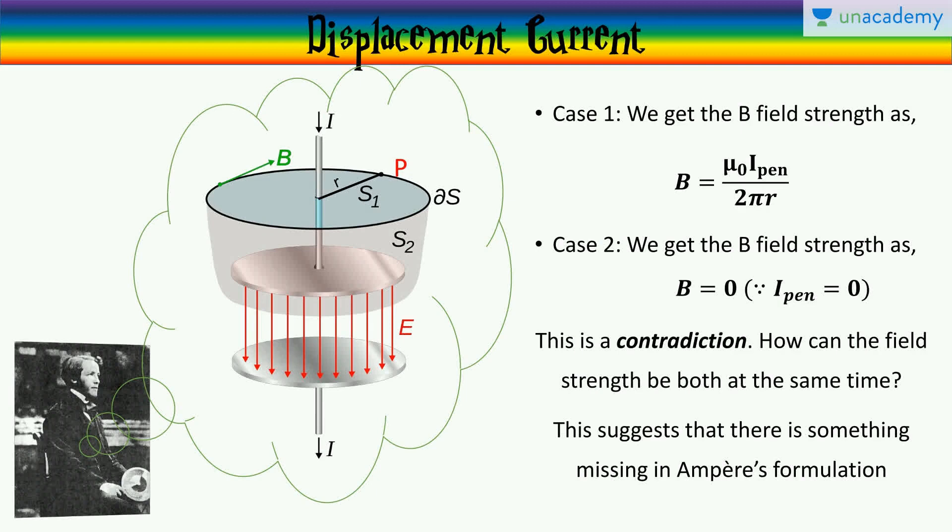Now, in case one, we get the magnetic field strength, as we might expect from Biot-Savart's law as well, which is equal to mu naught I_pen, the penetrating current, divided by 2 pi r. The magnetic field strength goes down as 1 by r, as you go away from the current carrying wire. Now, this is exactly what we have found in the past using Biot-Savart's law. Ampere's law gives you the same result, which is cool.